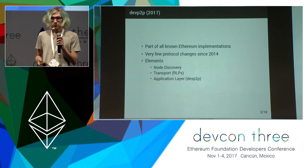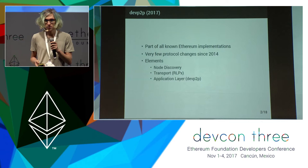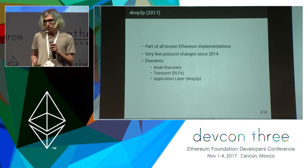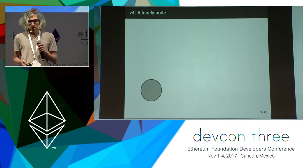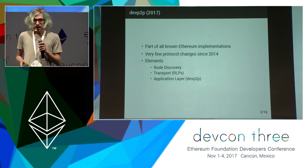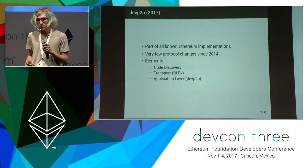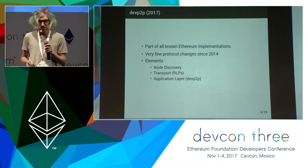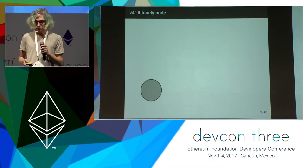DevP2P has a bunch of elements to it. The first is the node discovery protocol, which is a way of finding other nodes to talk to. Then there is the RLPx transport protocol, which is spoken on TCP connections between nodes. And finally there's an application layer protocol that sits on top of RLPx, which is somewhat confusingly also called DevP2P — so both the overall system and this particular protocol share that name.